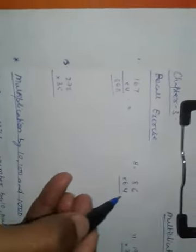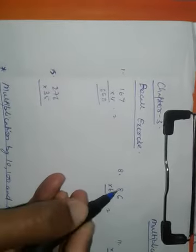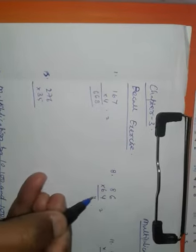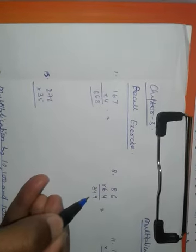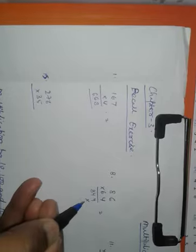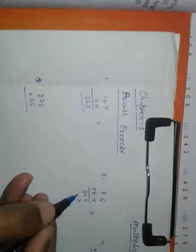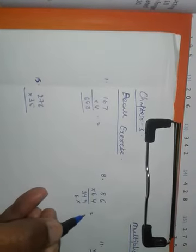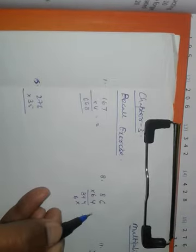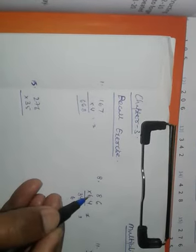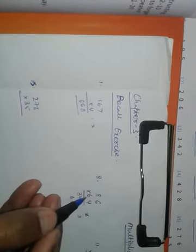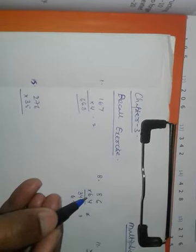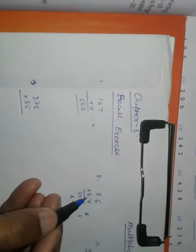Now here also, 6, 4, 24. 2 carry. 8, 4, 22, plus 2, 32. 4, you need to be a cross. Then 6, 6, 36. We have 3 with us, then 8 plus 6, it is 38, 48, 48 plus 3, 51.